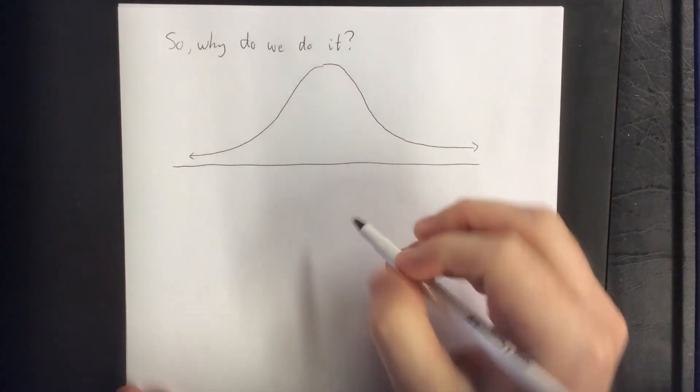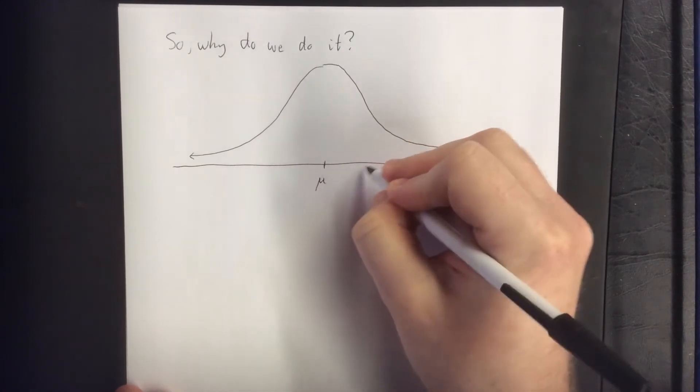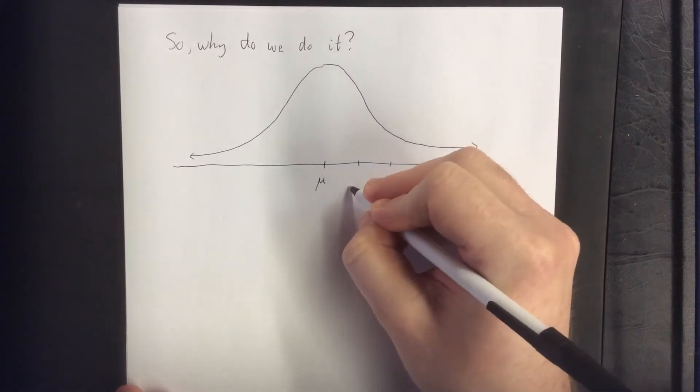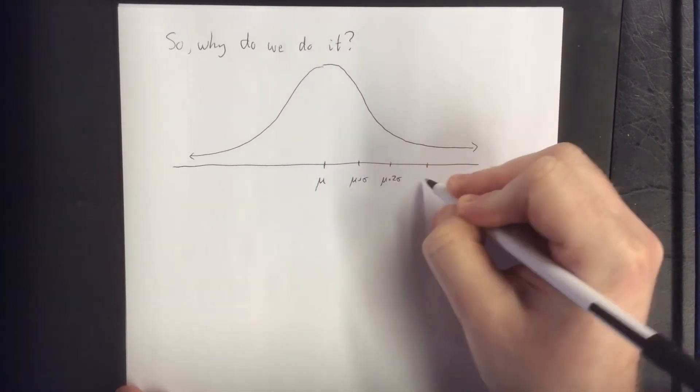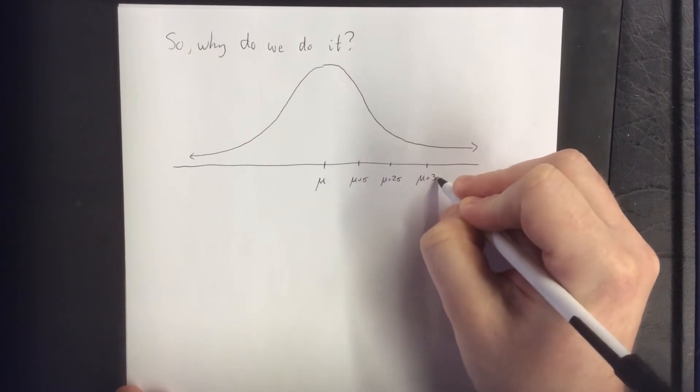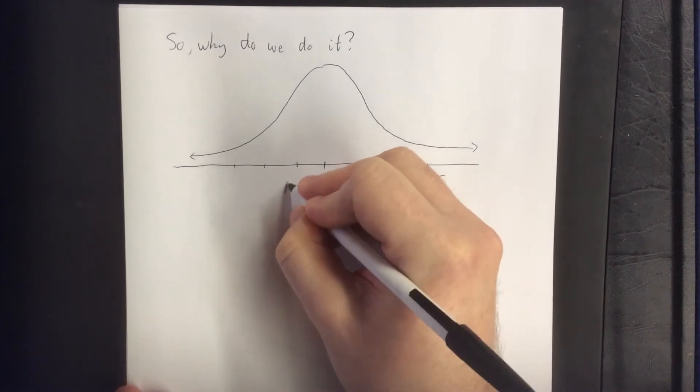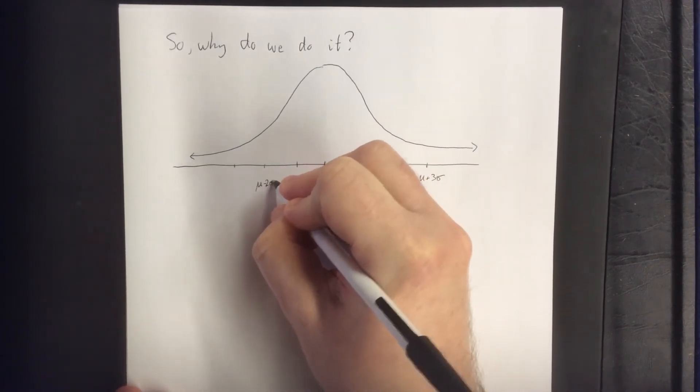Now in a normal distribution, area underneath a curve can represent a probability that something will be the way that it is. So we have a mean, we have standard deviations. I'm not going to get too statistical here, but depending on how far away you are from the mean, it can mean certain deviations from what's normal or expected.